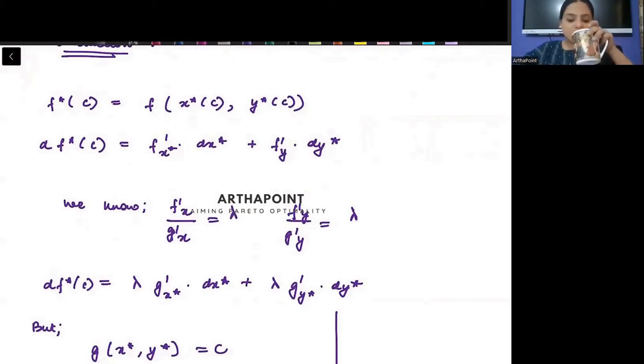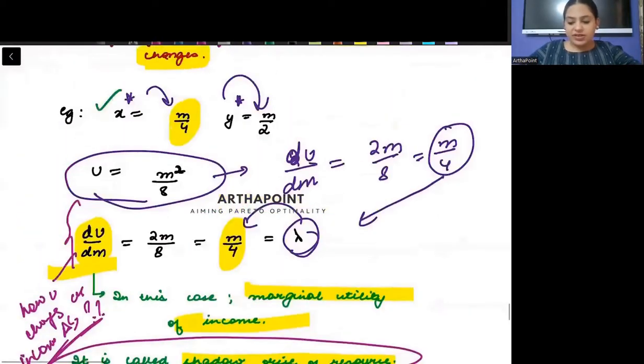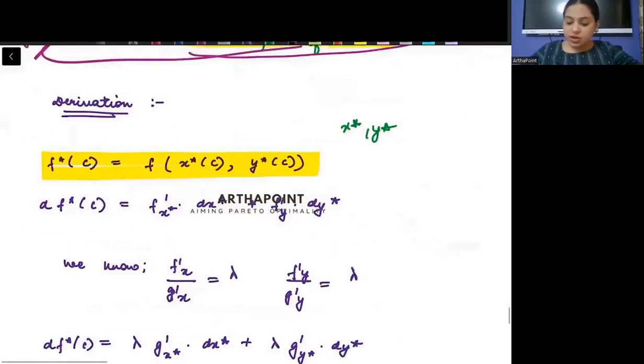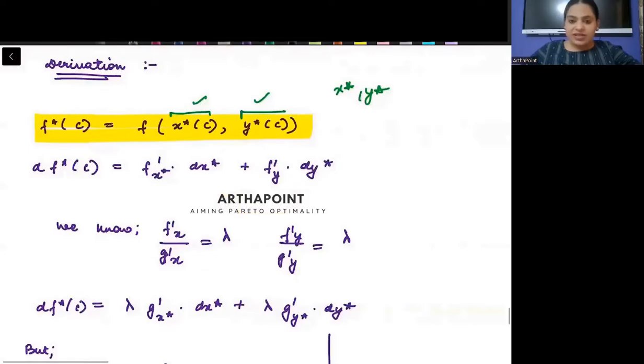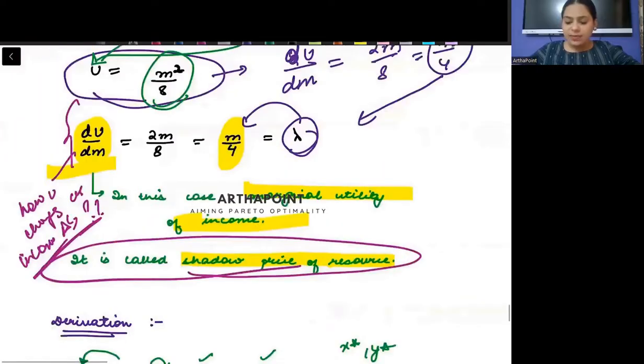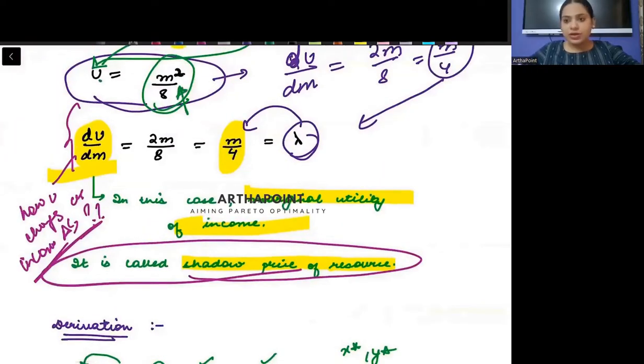So now just consider the objective function. Now consider the objective function. So my objective function, suppose I have found out my optima X*, Y*. Just say I have my optima X*, Y*, and I put it back in the objective function. So this is what I have done here. So I find my optima X*, Y*, they are a function of C. Just say my C was income, so they were coming as a function of income. So optima X*, Y* is a function of that resource, function of C. When you put it in the objective function, you get the maximum value of the function, and this is also a function of C. Just say utility was a function of income.